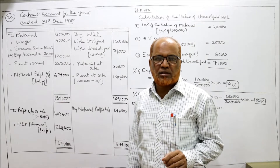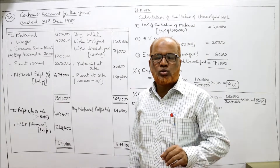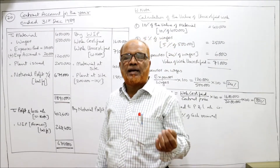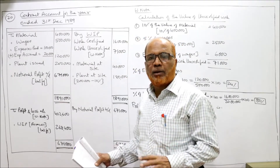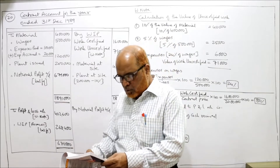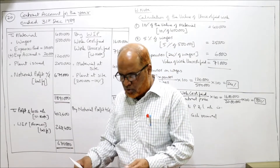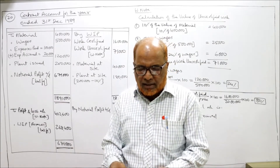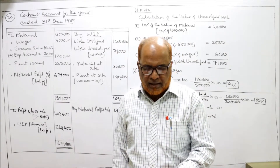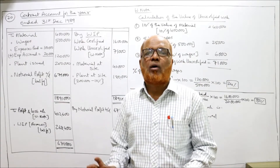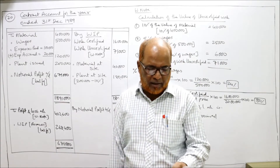For new viewers who do not know, please go to the link, get a copy and keep it before watching the problems. Now in the 20th problem, you are required to prepare the contract account for the year ended 31st December 1989. Only the contract account needs to be made.